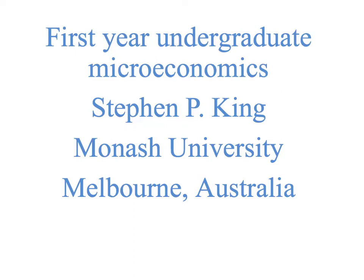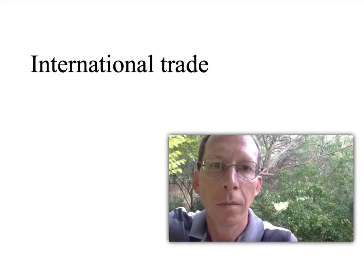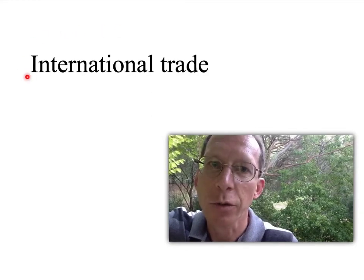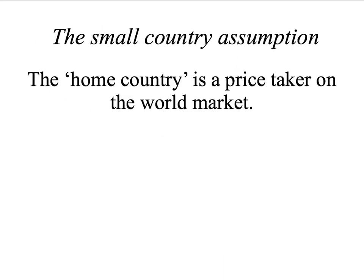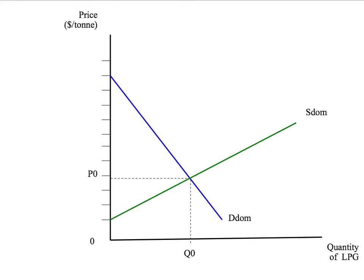Hi and welcome back to first year undergraduate microeconomics. We're looking at international trade, and just to remind you, we're making the small country assumption where the home country is a price taker on the world market. Let's look at the situation of exports. We have the quantity of LPG on the horizontal axis and the price on the vertical axis. We start in autarky where there is no international trade, so the equilibrium is where domestic supply and domestic demand cross at a price of P0 and Q0.